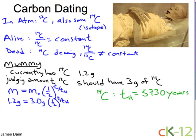Let's do a little arithmetic and then plug in that half-life number. Dividing both sides by 3 grams, 1.2 divided by 3 is 0.4. So that equals one-half to the power of T over the half-life time.